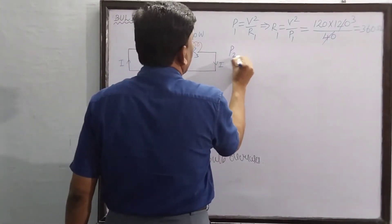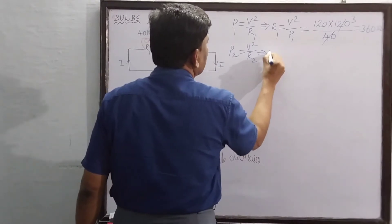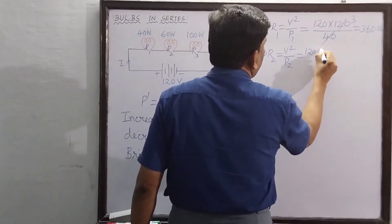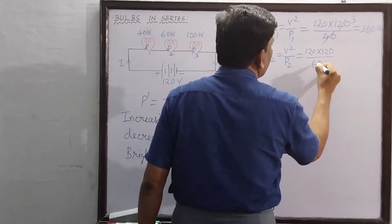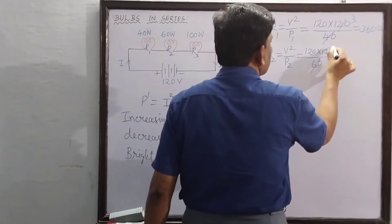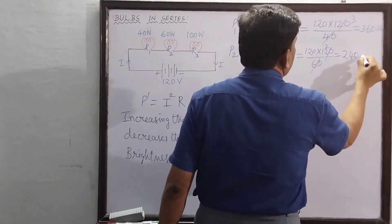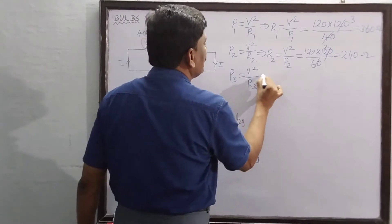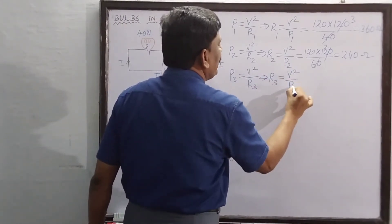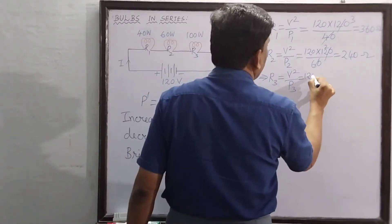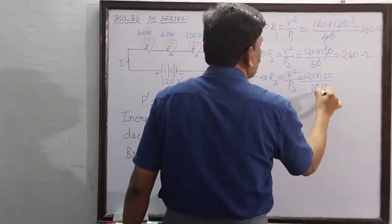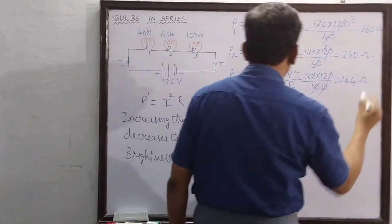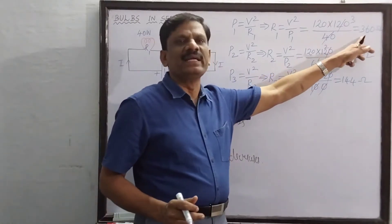For the second bulb: R2 = V²/P2 = 120 × 120 / 60 = 240 ohms. For the third bulb: R3 = V²/P3 = 120 × 120 / 100 = 144 ohms.